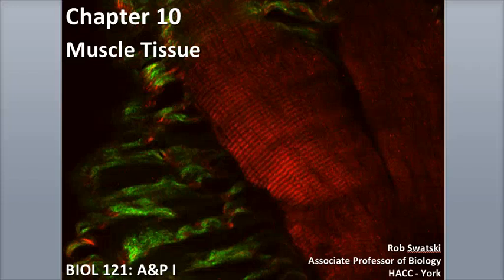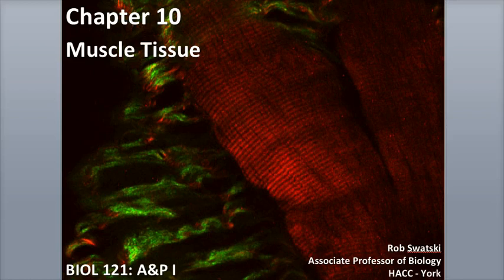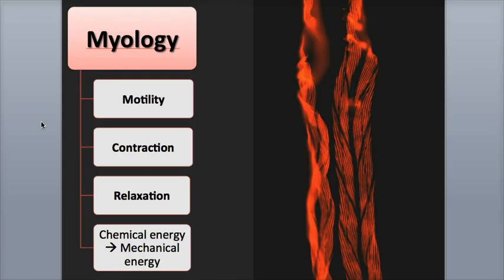Hi everyone, this is Rob Swatsky from the York Campus of HACC. In this podcast I'll be reviewing muscle tissue, giving an introduction to the different types of muscle tissues, their basic structure and functions, and we'll also take a look at the major properties of muscle tissue. Myology is a specialized branch of anatomy that studies the structure and functions of muscles. The prefix myo refers to muscles, and you'll be seeing a lot of this prefix in the terms throughout the chapter.